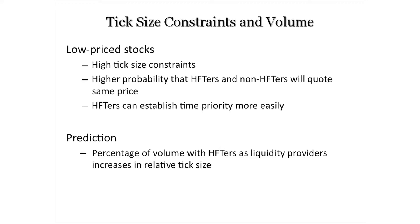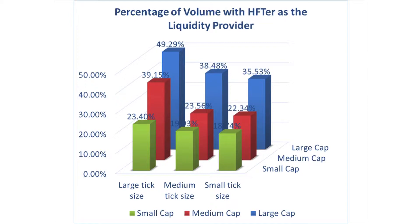The prediction is: the percent of volume with HFT as liquidity provider should increase with relative tick size. This graph shows it for large-cap stocks: as relative tick size decreases, the market share of HFT liquidity provision drops dramatically — from almost half to about a third. Intuitively, HFT doesn't make much market for Google, but makes a lot of market for Citigroup. When Citigroup did a reverse split, some HFTs may have been pushed out of the market because speed became less important.